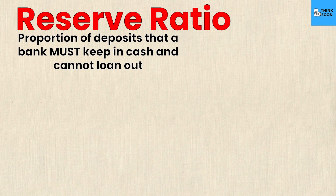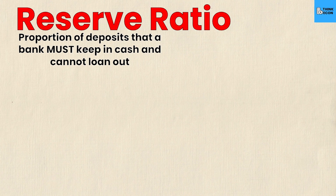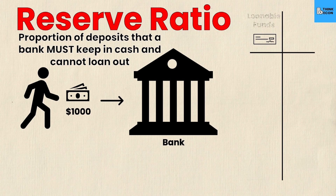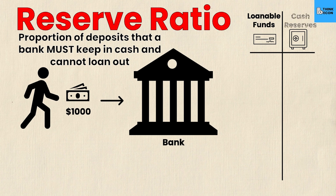Let's look at an actual example. Consider somebody who deposits $1,000 at a bank. The bank categorizes this money in two ways: loanable funds — money the bank can re-loan to a new person — and cash reserves, the money that must be saved in the back and cannot be loaned out. The reserve ratio is the percentage of money that must go into the safe.